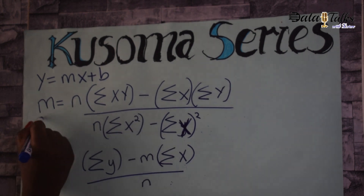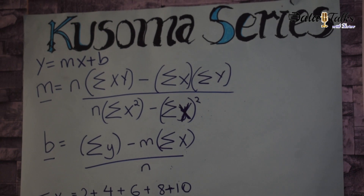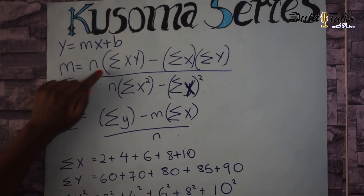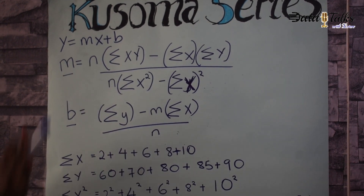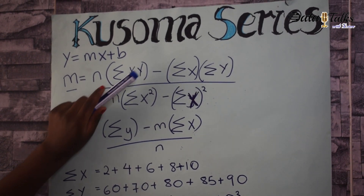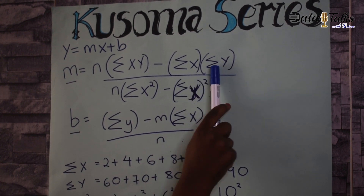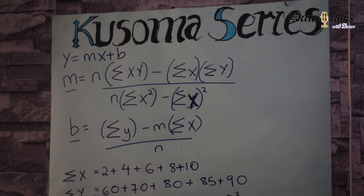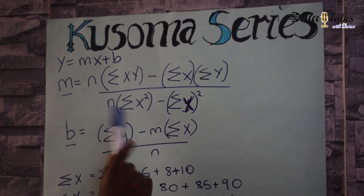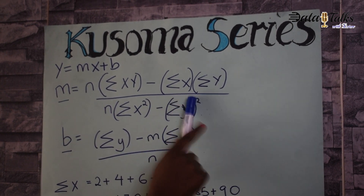m equals the number of variables in x — which are five: 1, 2, 3, 4, 5 — multiplied by the summation of the product of x and y, minus the summation of x multiplied by the summation of y, all divided by the number of entities multiplied by the summation of x-squared, minus the summation of x squared.